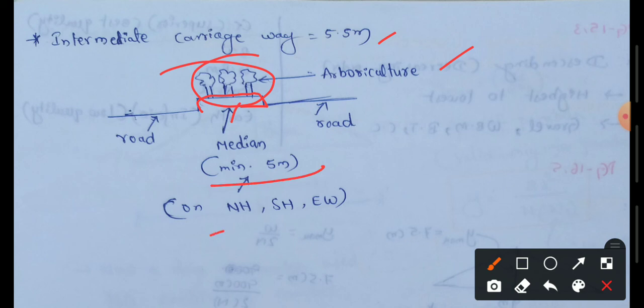This applies to highways, state highways, national highways, and express highways. The intermediate carriageway width is 5.5m.